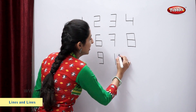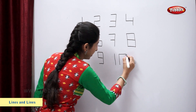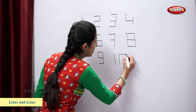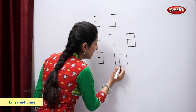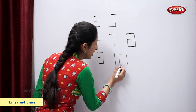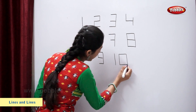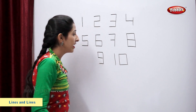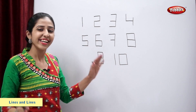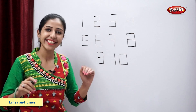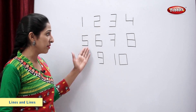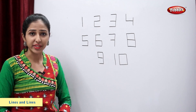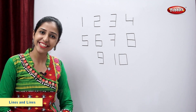Standing line, standing line, sleeping line, a standing line, a sleeping line. Number ten. So, these are numbers using lines.